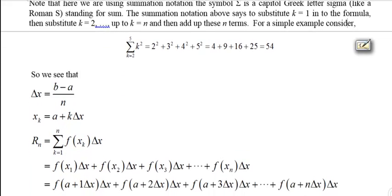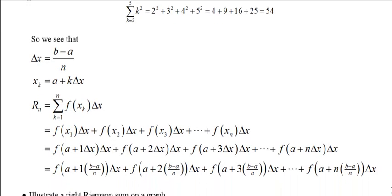So it's just an example of how summation notation works. So we would see that Δx is (b-a)/n. x_k is a plus k Δx's. And R_n is the sum from k equals 1 to n of f(x_k) times Δx. Now, remember, so this means f(x₁) times Δx plus f(x₂) times Δx plus f(x₃) times Δx and so on, ending up with f(x_n) Δx. And, of course, x₁ is a plus 1 Δx. x₂ is a plus 2 Δx. And so forth.